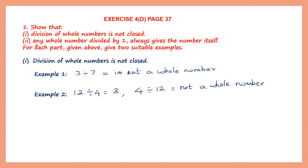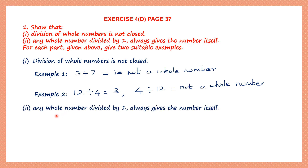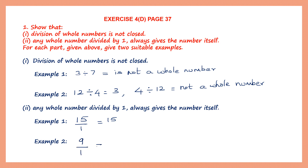The second part: any whole number divided by 1 always gives the number itself. Example 1: take 15 divided by 1, which is 15. So 15 is a whole number, and when you divide it by 1, it always gives the number itself. Example 2: take 9 divided by 1, your answer will be 9 — you get back the same number.